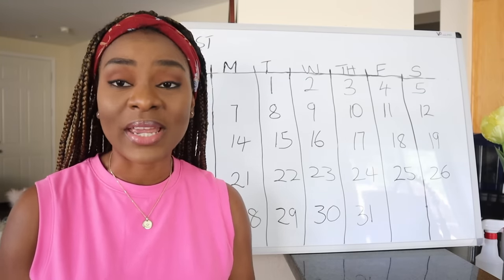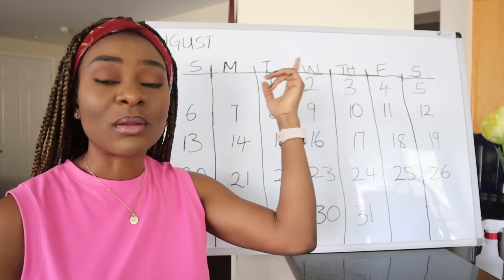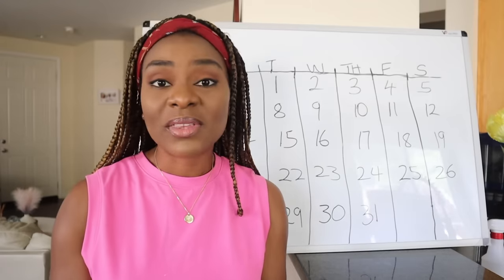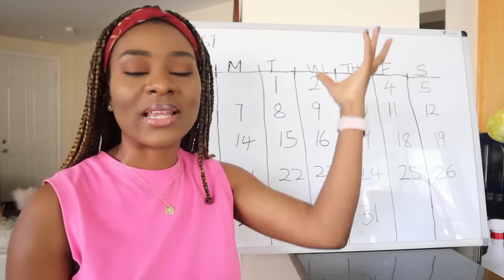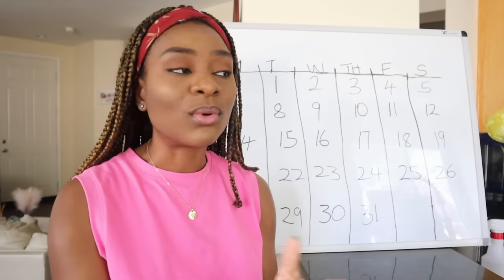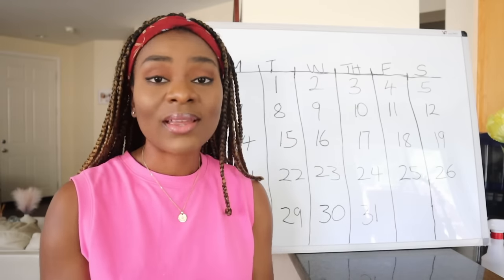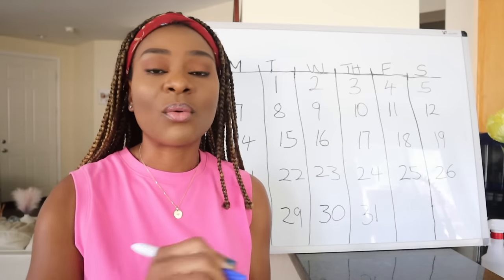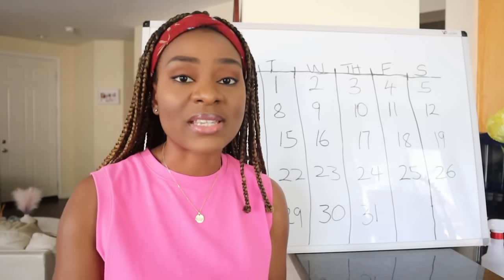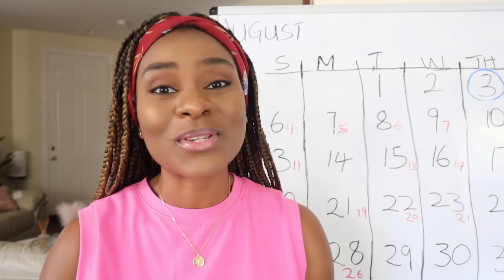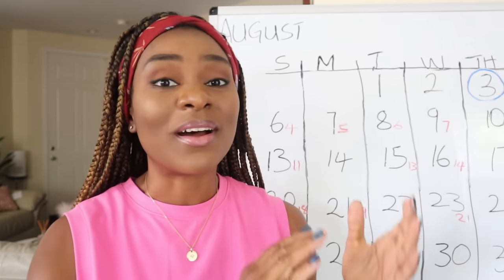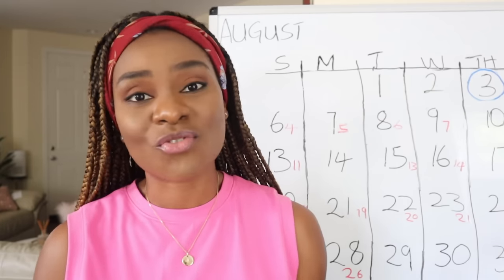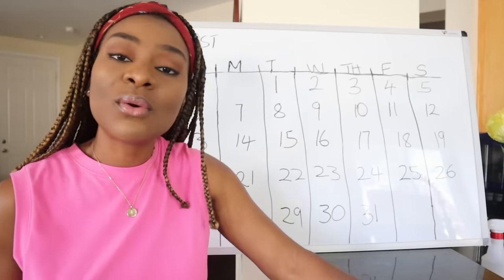We are using the calendar method to calculate ovulation today. I have my calendar drawn out here — I'm using the month of August. You can get a board like this, draw out some numbers and lines like a calendar, or use a notebook or an actual calendar to calculate your fertile window and ovulation every cycle. This method has helped us to conceive when we wanted to, and also helped us to avoid pregnancy when we wanted to.